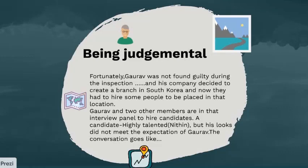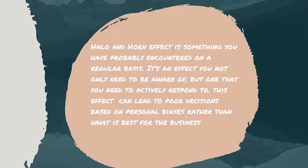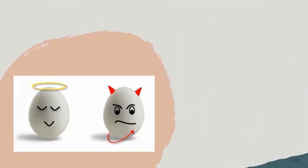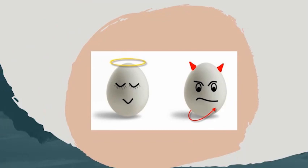Gaurav and two other members are on the interview panel to hire candidates. A highly talented candidate known as Nitin arrives, but his looks didn't meet the expectation of Gaurav. The Horn effect is something you have probably encountered on a regular basis — it's an effect you not only need to be aware of but one that you need to actively respond to, as it can lead to poor decisions based on personal biases. The Halo effect is a positive first impression of somebody that leads you to overlook their negative characters, whereas the Horn effect is when a negative first impression causes you to focus only on someone's negative aspects.